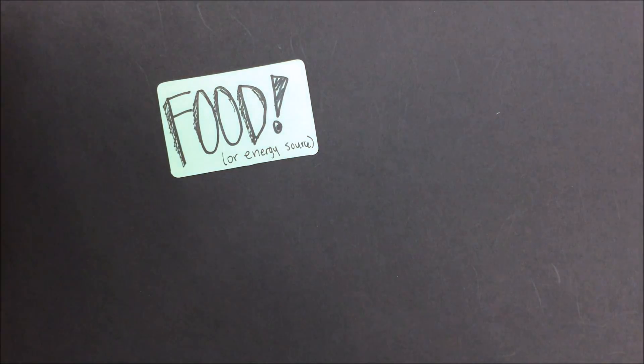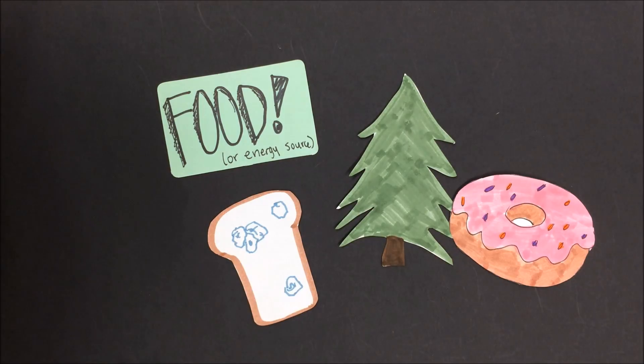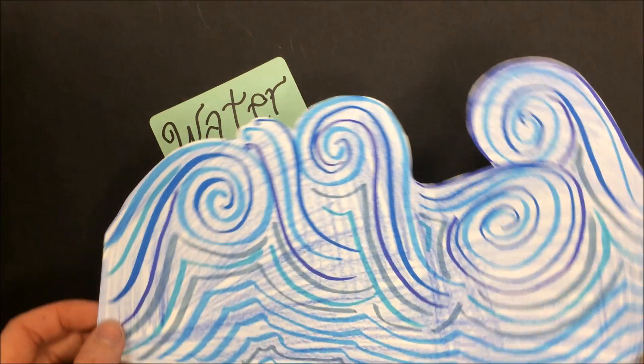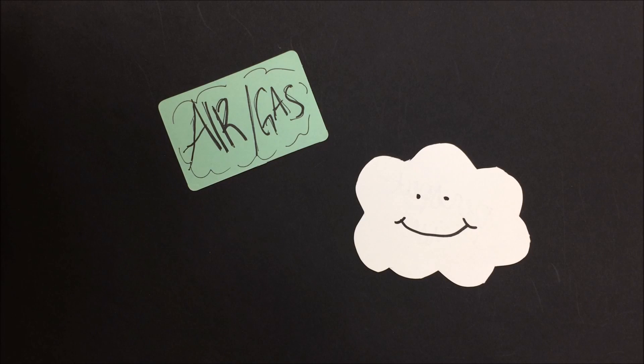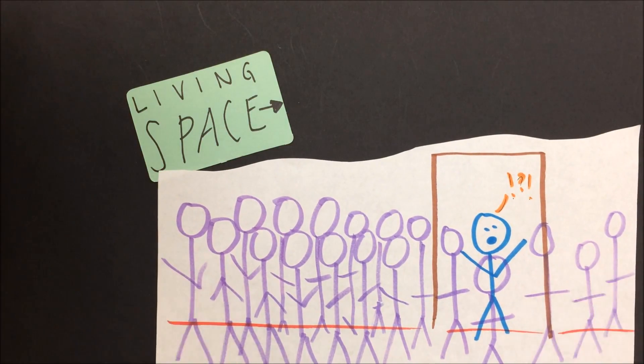All living things share a common need for food or some sort of energy source. As we said before, some organisms create their own food and others eat other organisms for food. All living things need water. All living things either live in water, drink water, or absorb water. All living things need some sort of gas to survive. For example, humans breathe in oxygen and breathe out carbon dioxide, while plants breathe in both oxygen and carbon dioxide and release oxygen. All living things require living space or habitat. When living space is limited, it can be very stressful for organisms as they compete for the other basic needs.